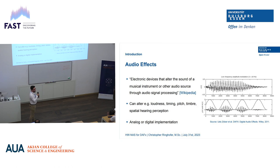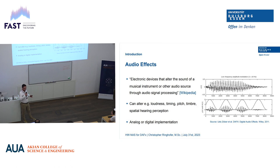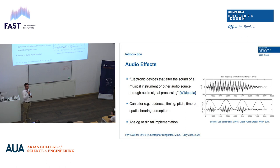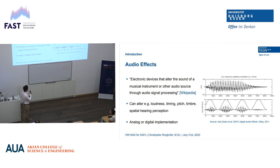Those effects can be implemented in analog or in digital. Analog implementations are usually implemented with electromagnetics — for example, tape. You could speed tape up, slow it down, flange it, and so on. Or electronically, via filters and non-linear processing elements like diodes and transistors that generate harmonic overtone content.